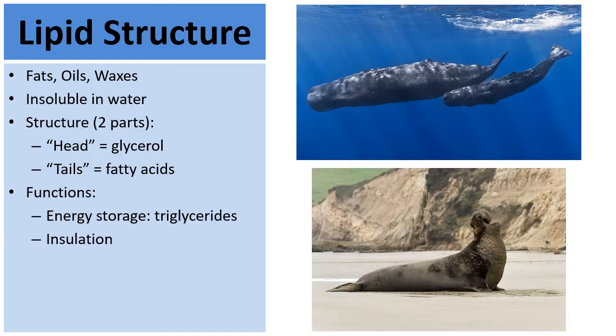A secondary function of lipids is insulation. If you're a whale or an elephant seal swimming through chilly ocean waters, having a thick layer of blubber helps to trap heat to keep you warm. It's a great form of insulation for organisms that live in cold environments.